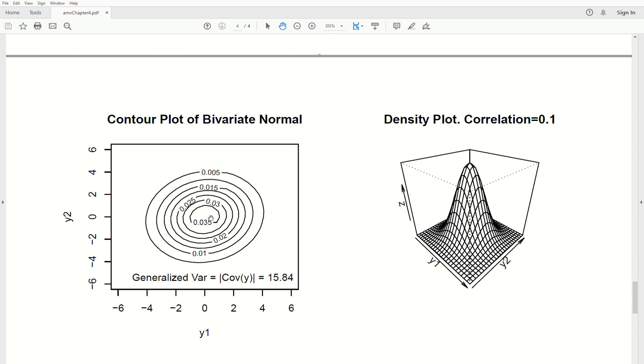Now, notice that the volume of the biggest one, it's some volume, and so we can calculate the generalized variance for this density. Now, it's a population parameter because we're using sigma and not the sample, but we get a value of 15.84. That's the generalized variance associated with this bivariate normal with a correlation of 0.1. Variance is four, mean vector zero.